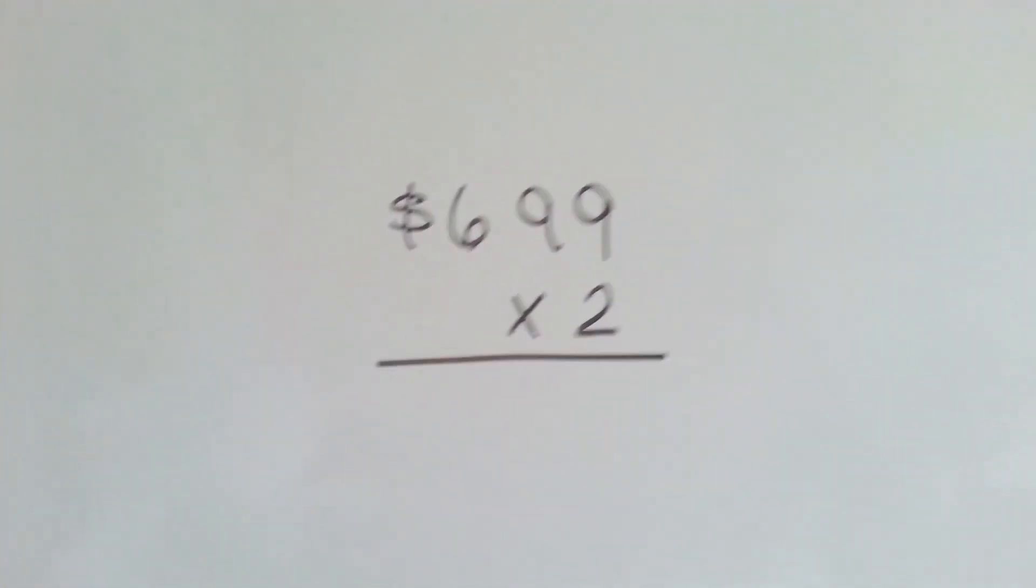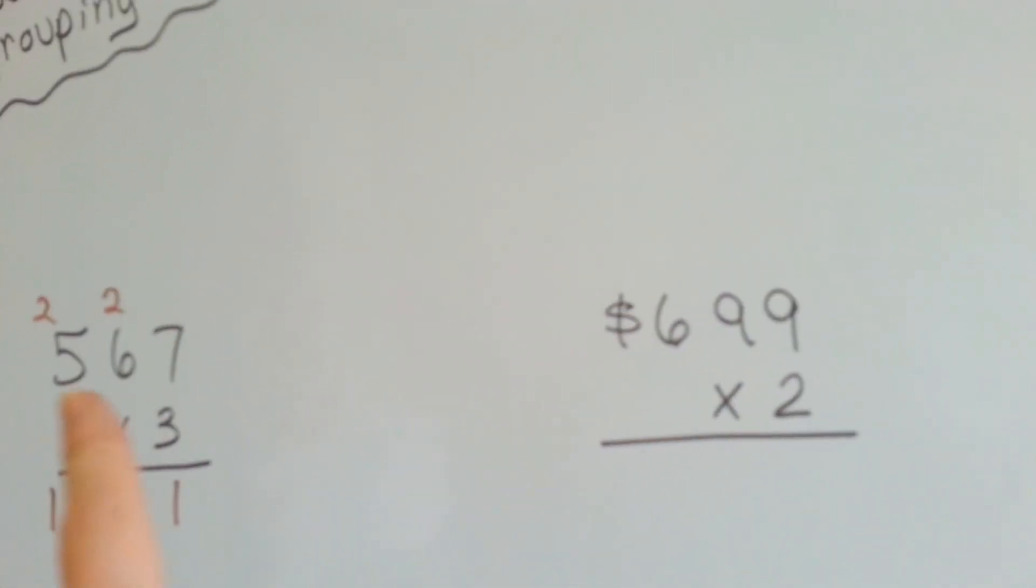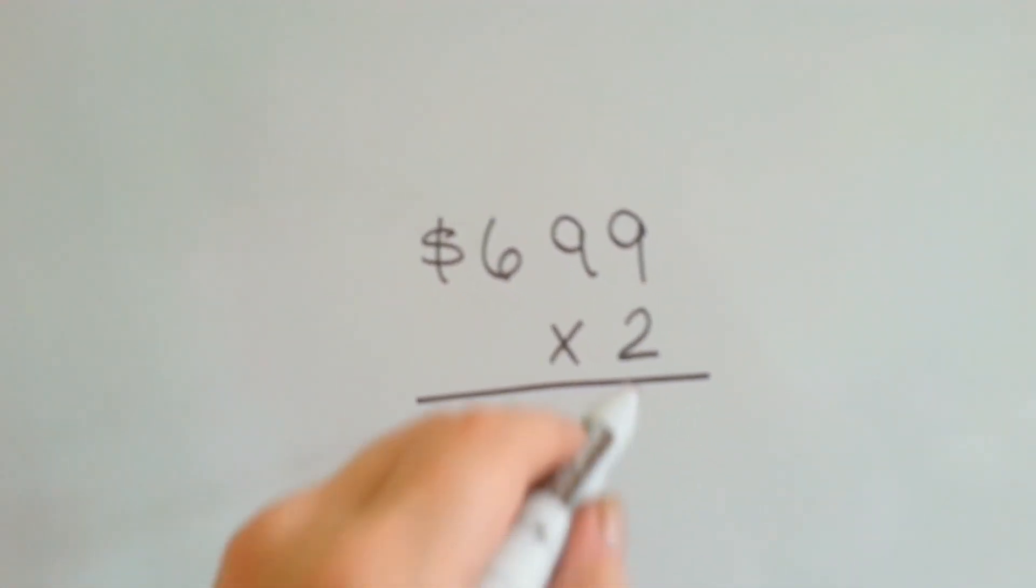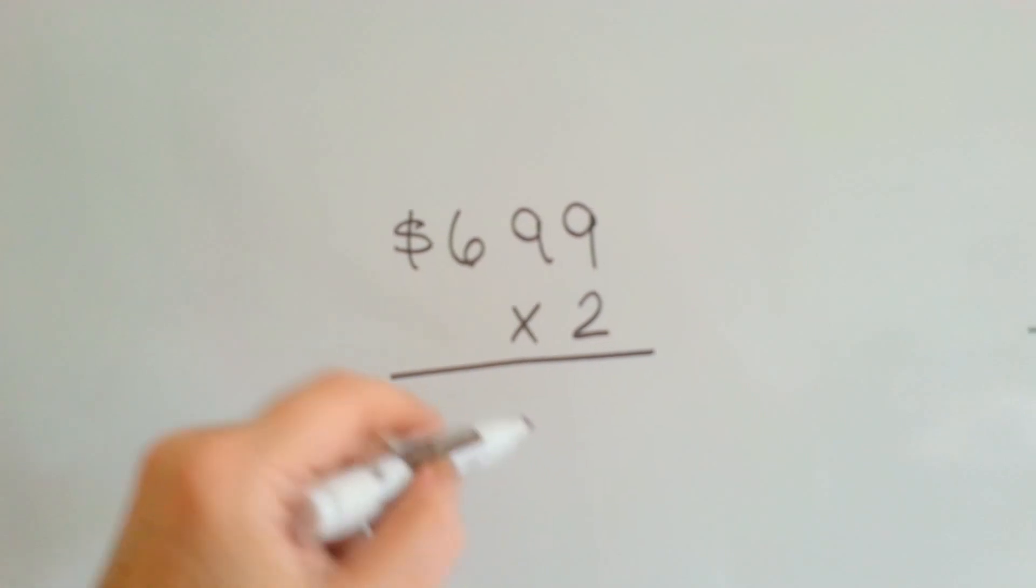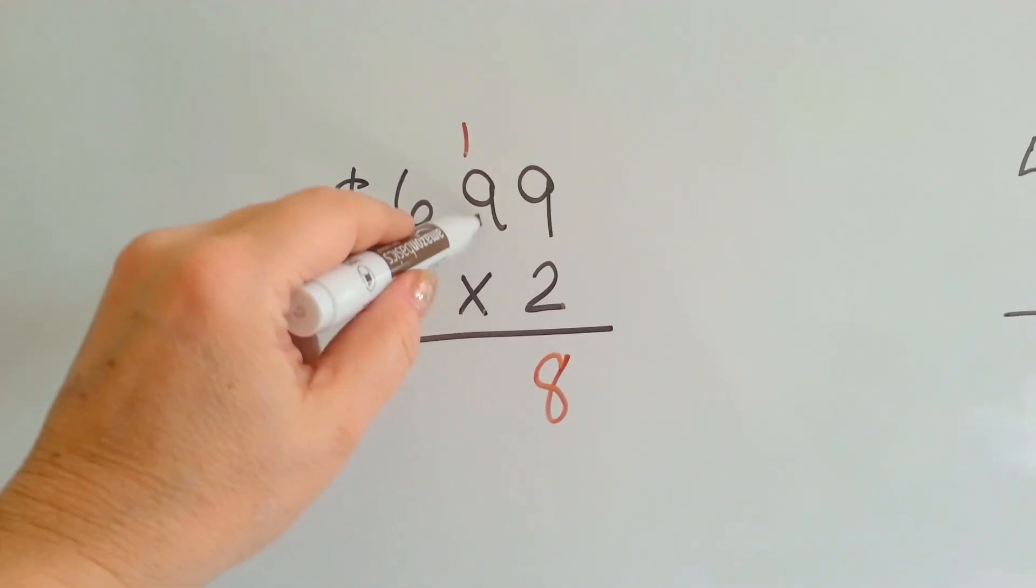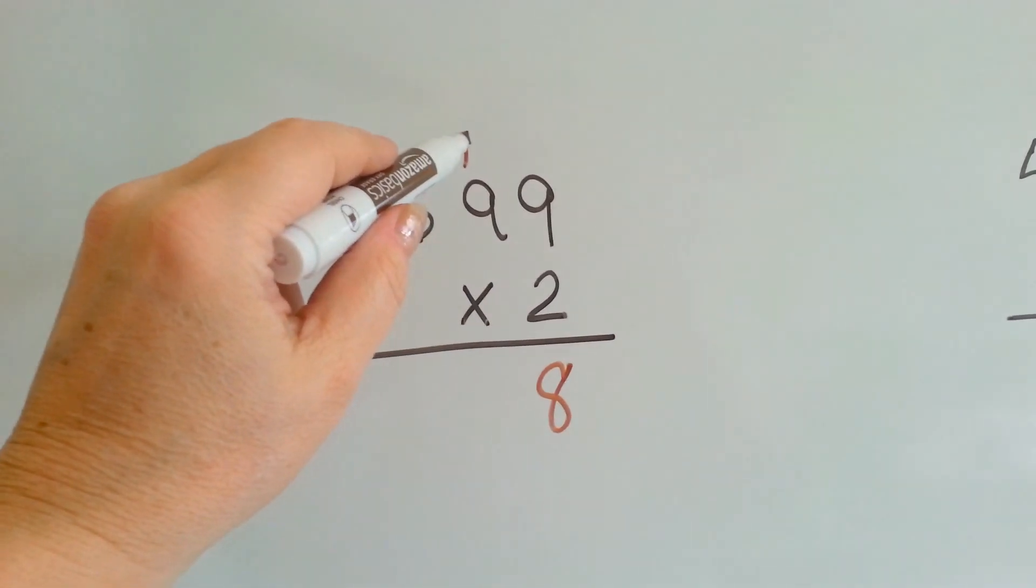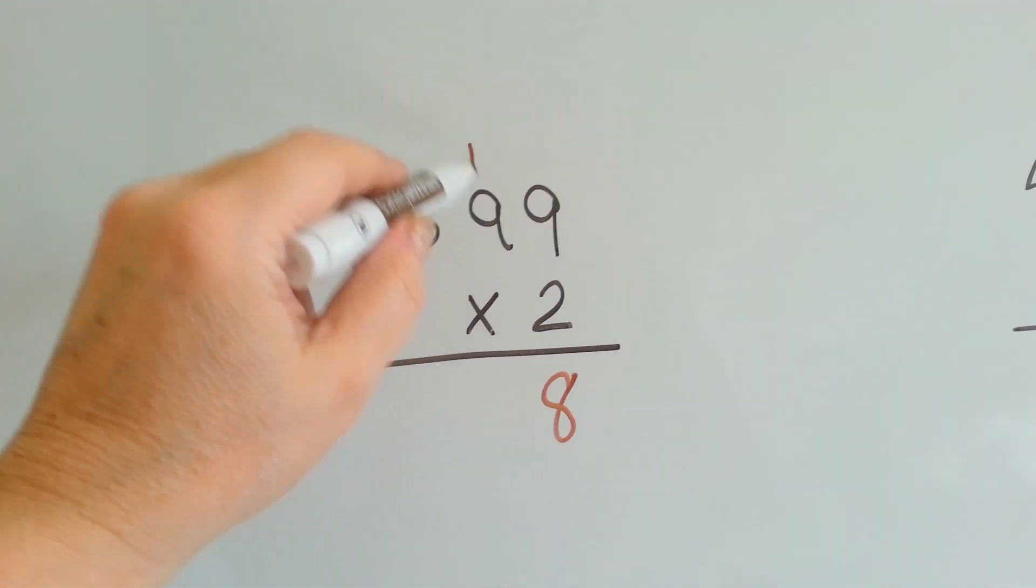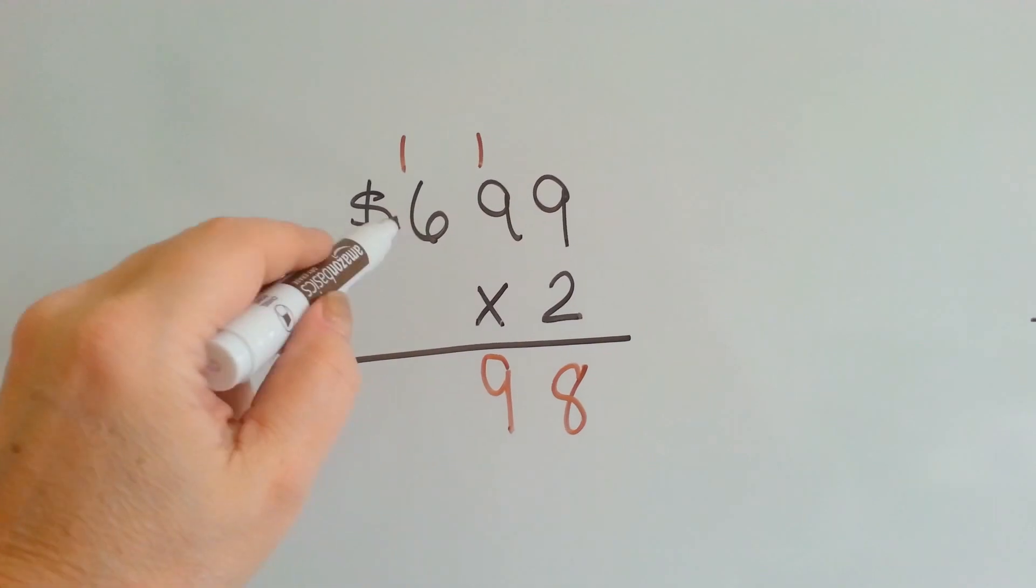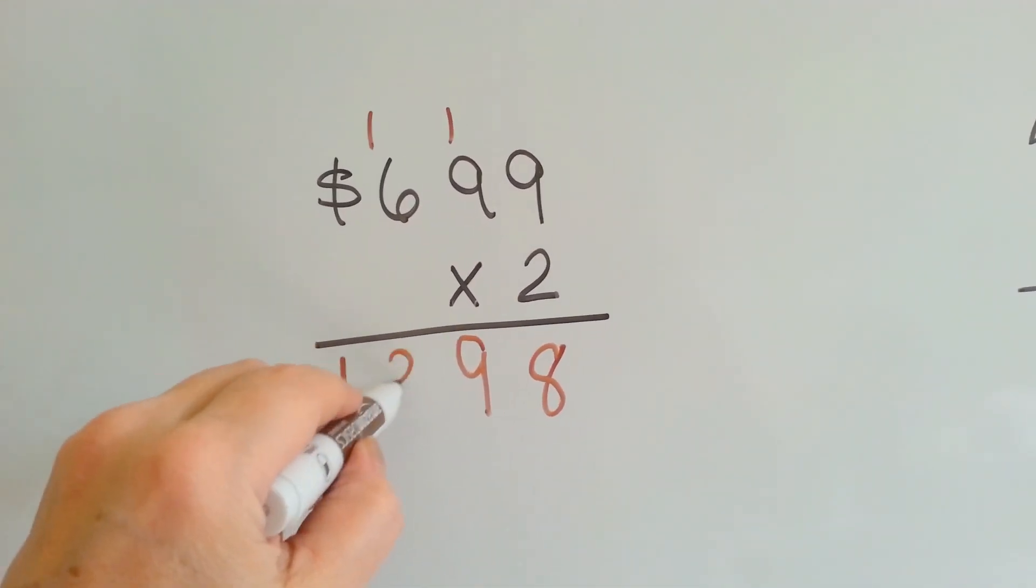Let's try this one. That was a 3-digit times a 1-digit, and here's another 3-digit. 2 times 9 is 18. We carry over the 1 and put the 8 down. Now we do 2 times 9 again, which is 18, except now we add the 1 we carried over, so 19. Put the 1 up and the 9 down. 2 times 6 is 12, plus 1 is 13.